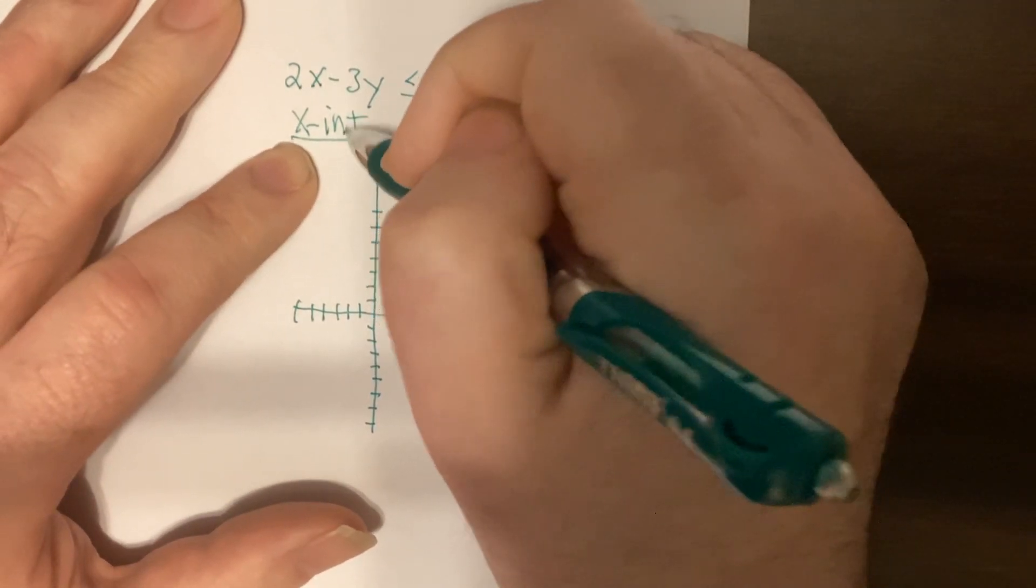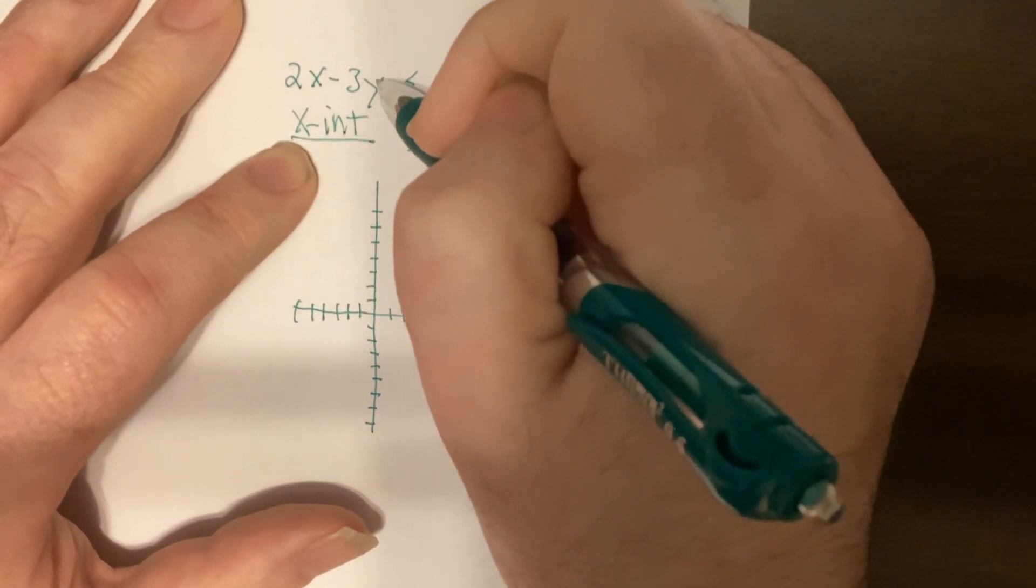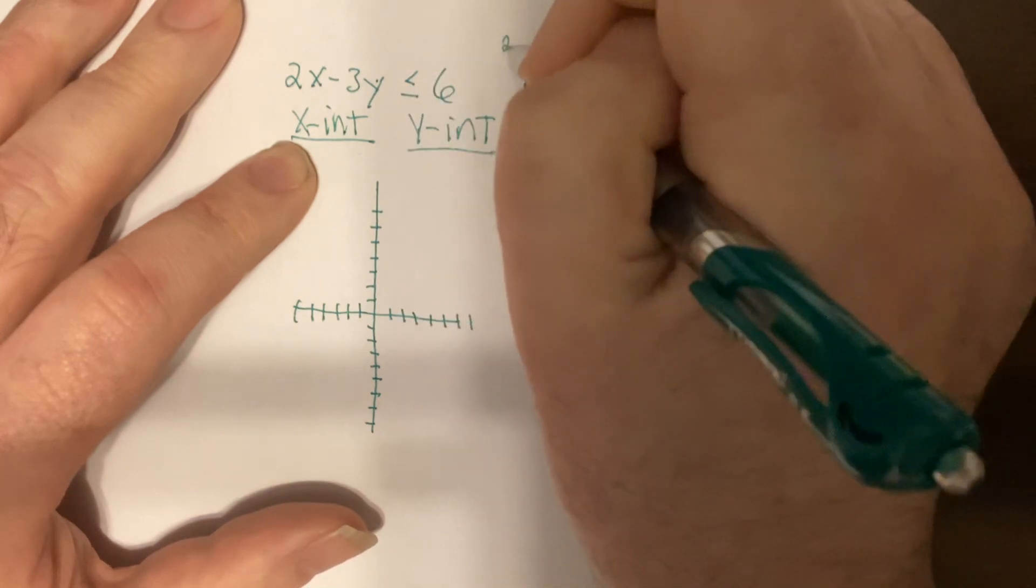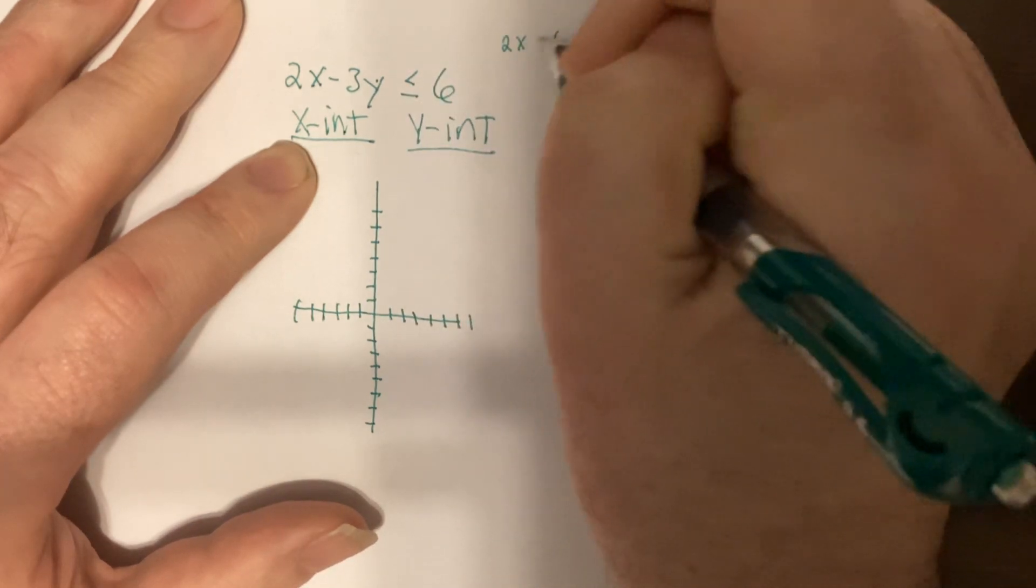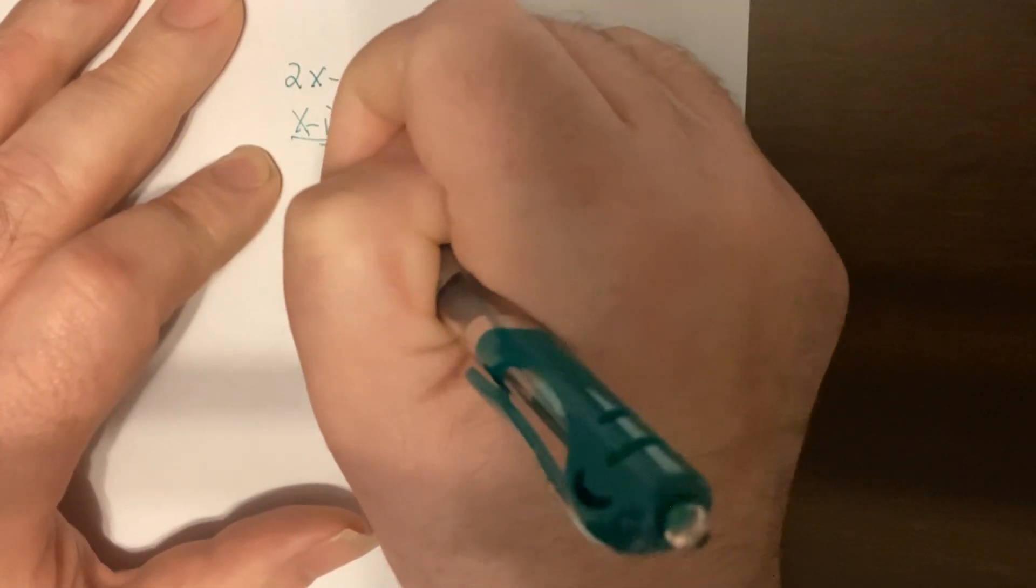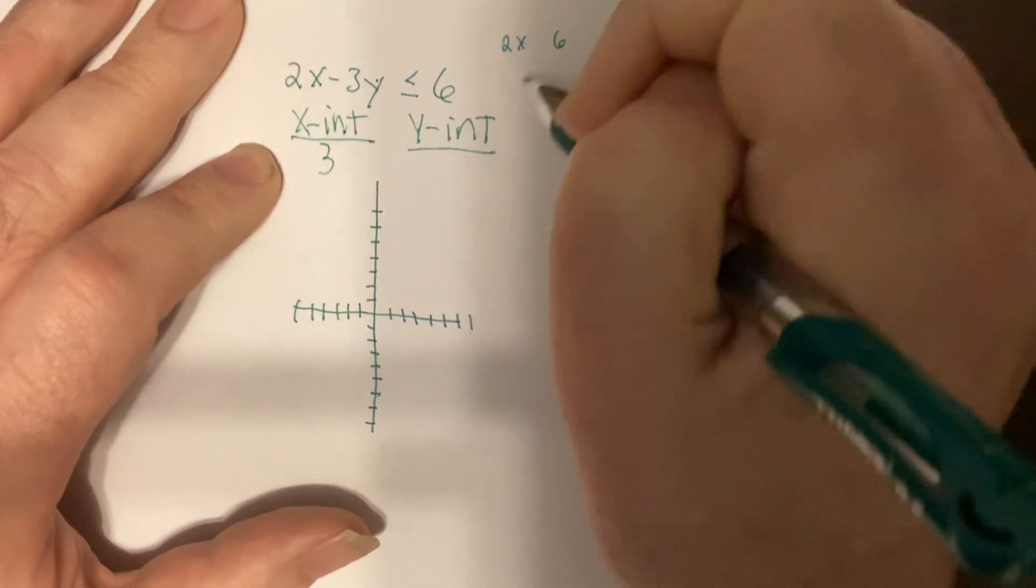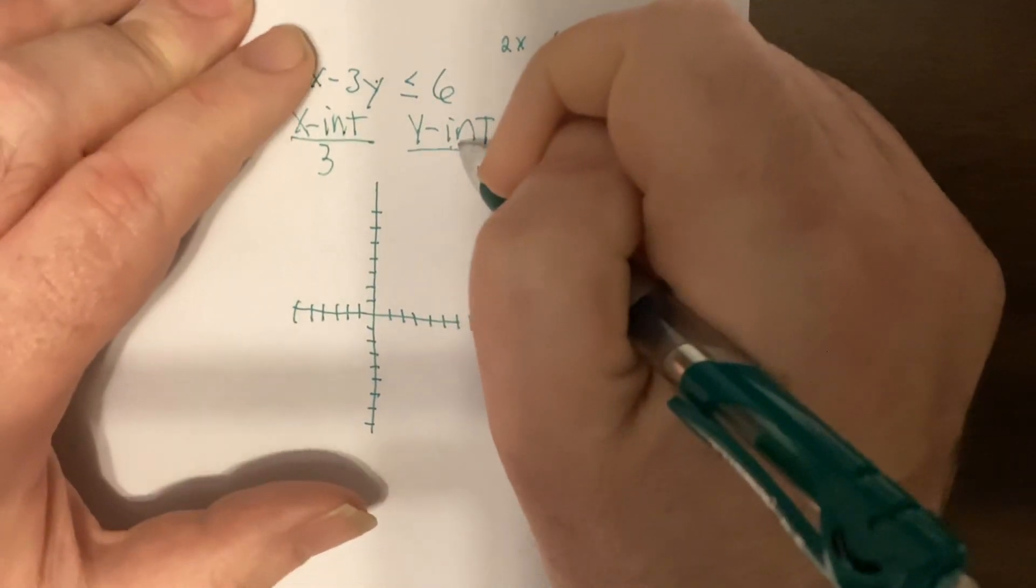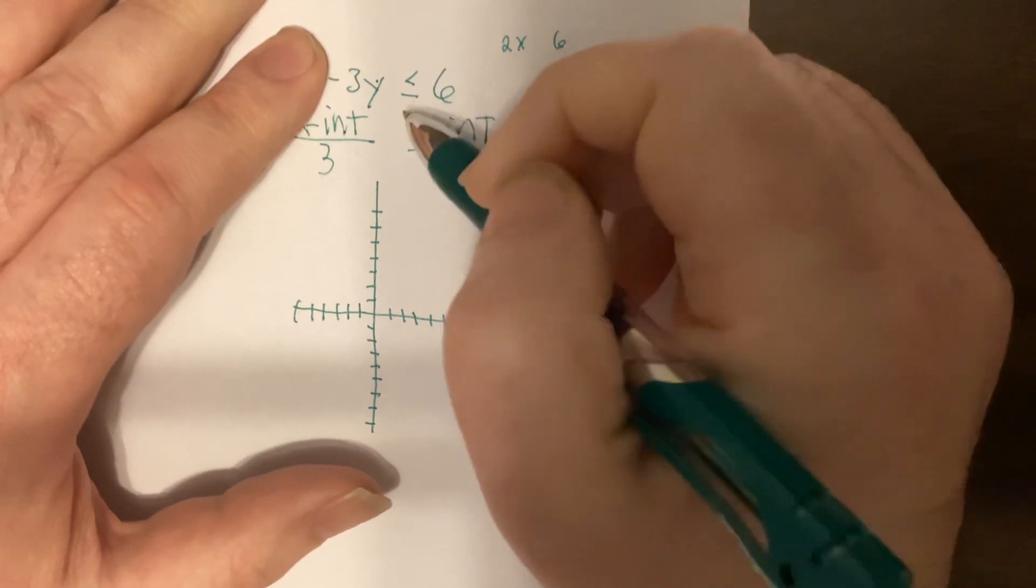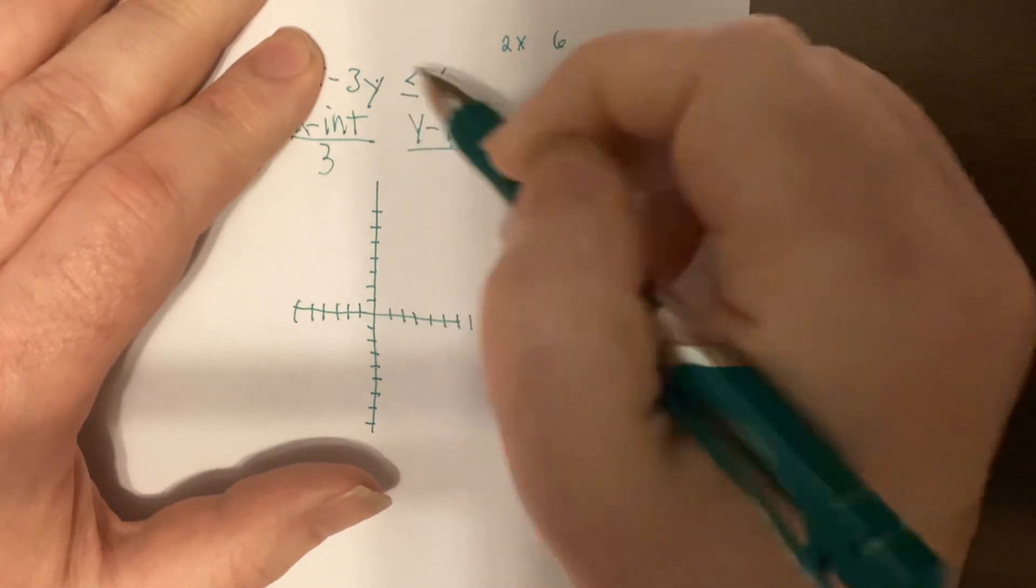So x-intercept, put zero in for y. So I'd have two x equals six. So I need three. Two times three is six. To find the y-intercept, put zero in for x. So that term drops out. What do you multiply negative three by to get six?